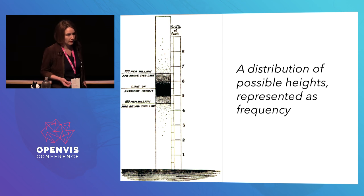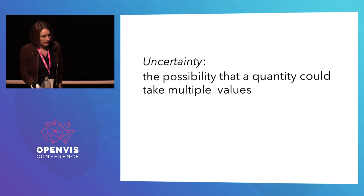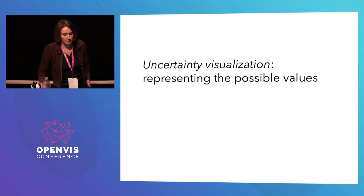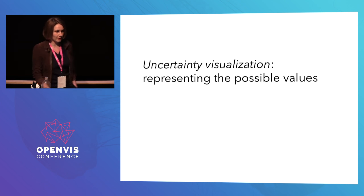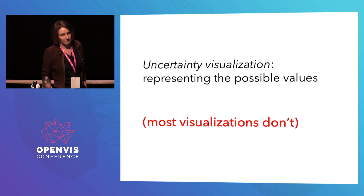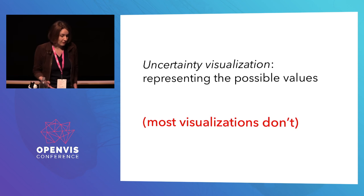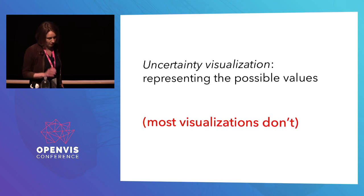What he had created was an uncertainty visualization — a distribution of possible heights represented as frequency, which ends up being important because people understand probability in terms of frequency much more easily. We could say from this example that uncertainty is simply the possibility that a quantity could take multiple values, and that makes uncertainty visualization the task of representing what those values are. Interestingly, most visualizations actually don't represent uncertainty — designers and users know it's complicated, and so even though data are always imperfect measurements, we often just don't show the uncertainty.